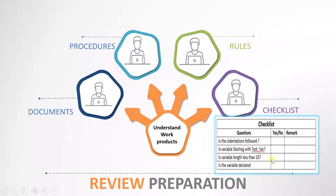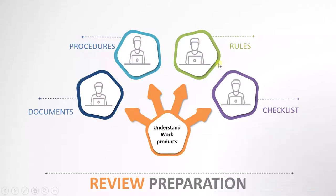For example, this checklist we have already seen — there are different questions in it. The reviewer has to understand these questions and also understand how he can apply these questions to the review products. If he has any confusion regarding these questions, he has to ask for clarification before starting the review activity. So these are the different things a reviewer has to understand: the document or the supporting documents, procedures, rules, and the checklist if anything is provided.